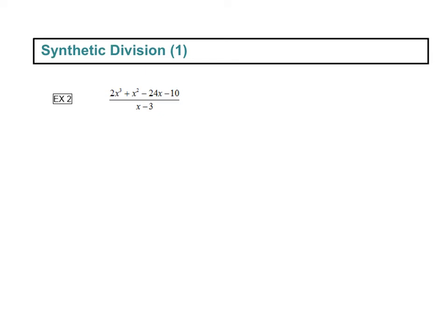All right, so we saw a synthetic division example in the intro video, so we're going to look at another one here. We start out with what we were dividing by x minus 3. It's a negative 3 there. We're going to write positive 3 in our little box.